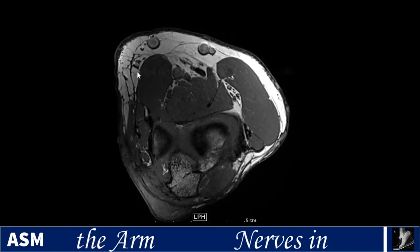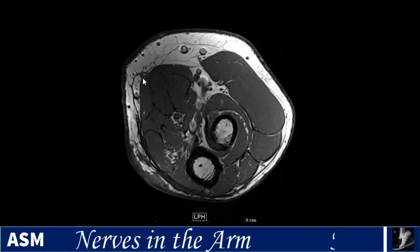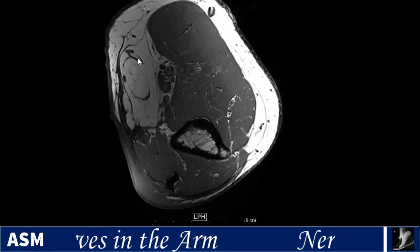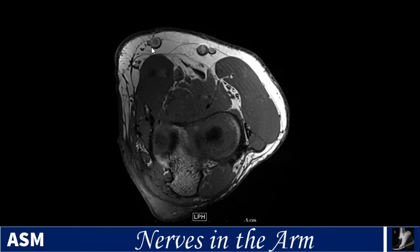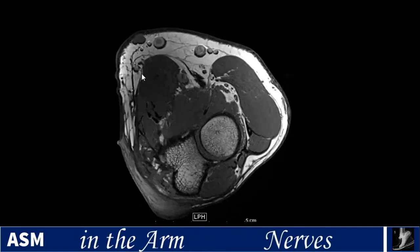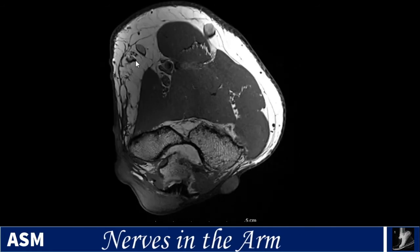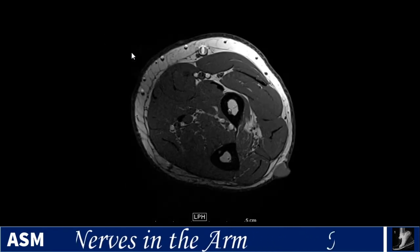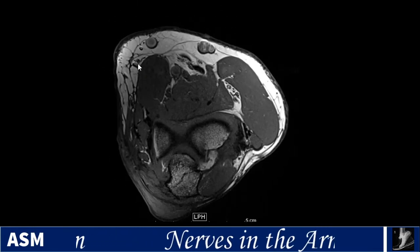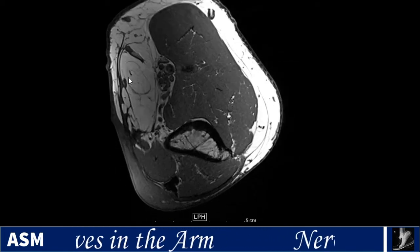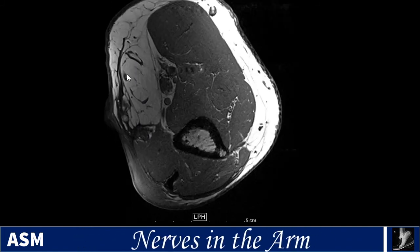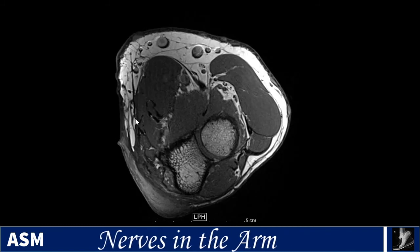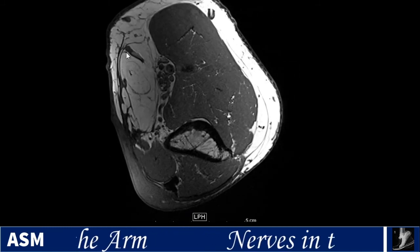Finally, the medial antebrachial cutaneous nerve has a volar and an ulnar branch. Following it proximally, you can see its association with the basilic vein, which splits into the medial cubital, medial antebrachial, and basilic forearm components. The nerve branches run near those basilic vein branches. The little neurofibromas confirm this is nerve tissue. By location, this is the volar branch of the medial antebrachial cutaneous nerve, and following it proximally, the ulnar branch comes in to join it.